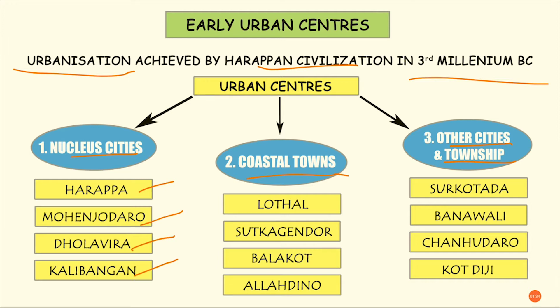Next we have coastal towns. Coastal towns are those towns situated near water — for example, the sea or a river. Examples of coastal towns are Lothal, Sutkagendor, Balakot, and Allahdino. These coastal towns are important for any civilization.